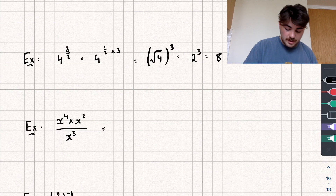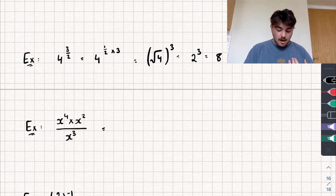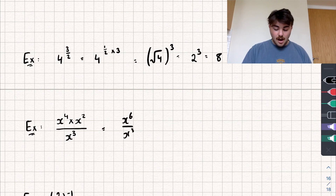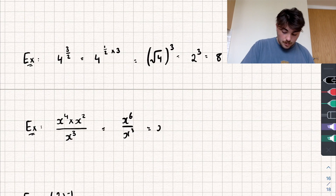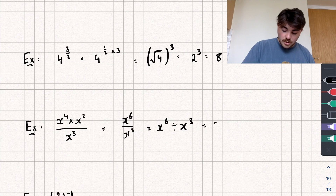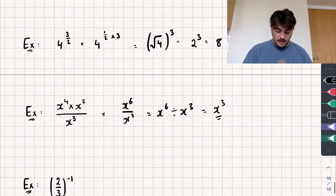Second example: x to the power of four times x squared, all divided by x cubed. First, multiply: x to the power of four times x squared — same base, so add the powers to get x to the power of six. Then divide by x cubed — same base, so subtract the powers: six minus three gives x to the power of three, or x cubed.